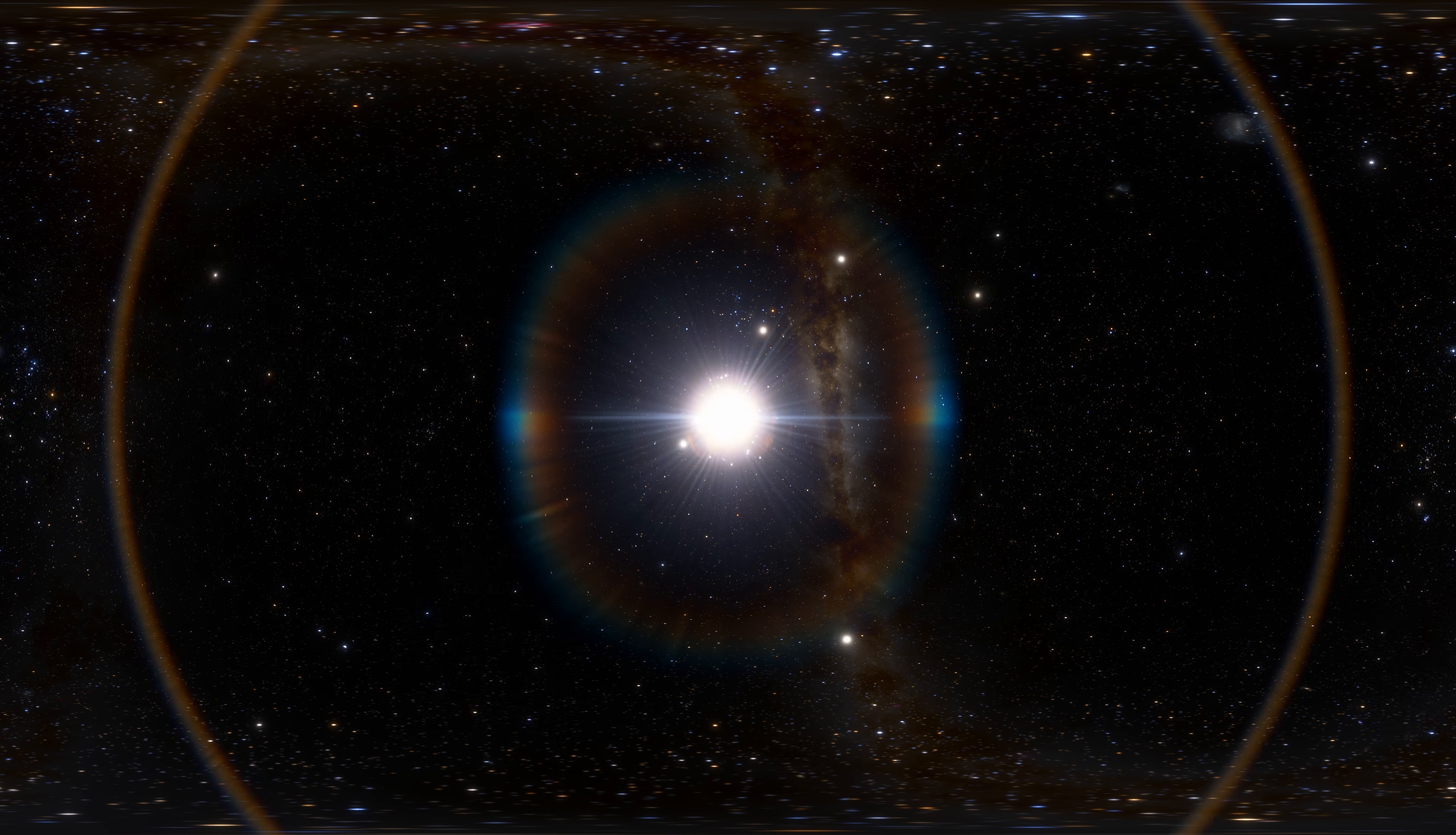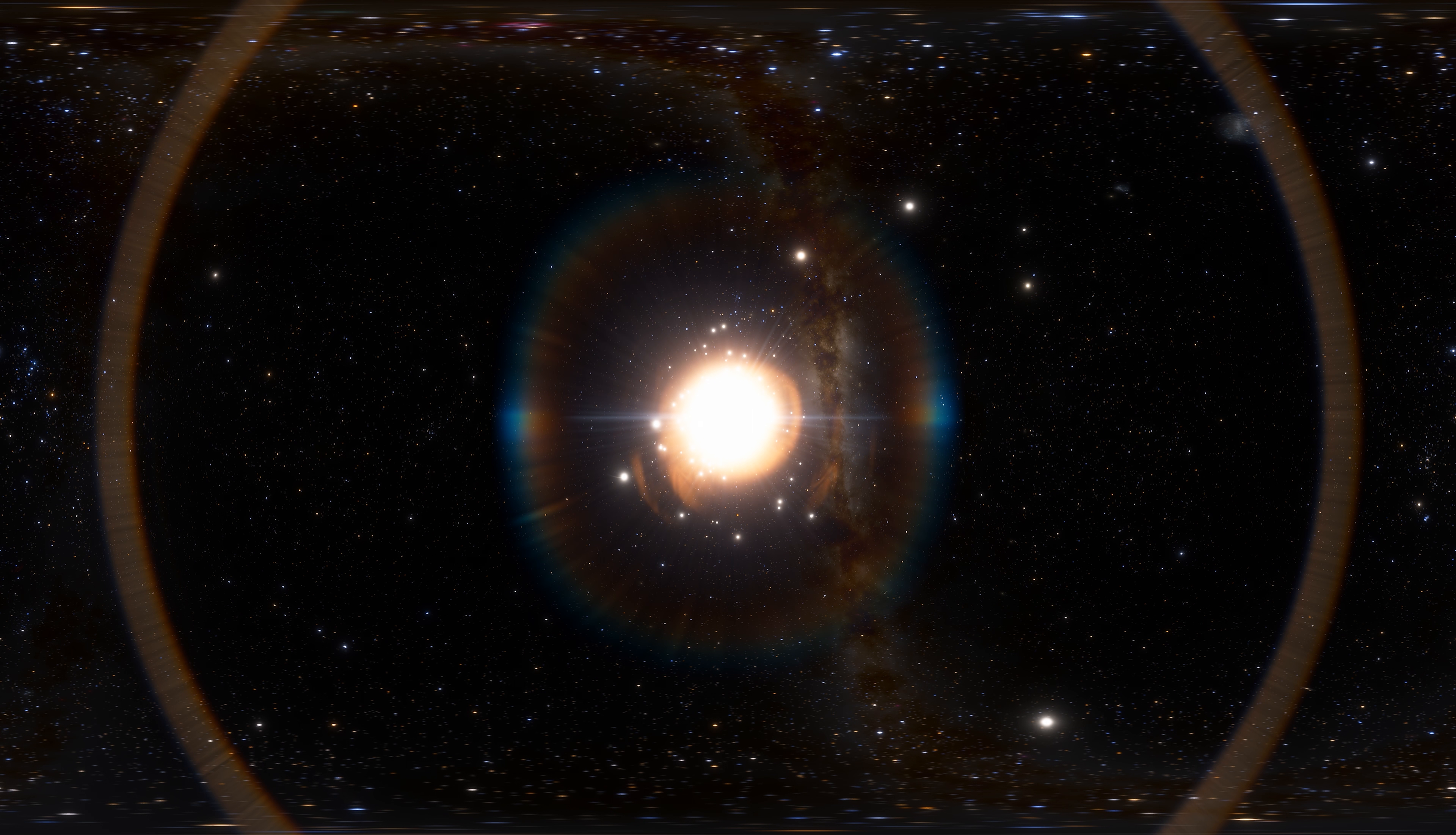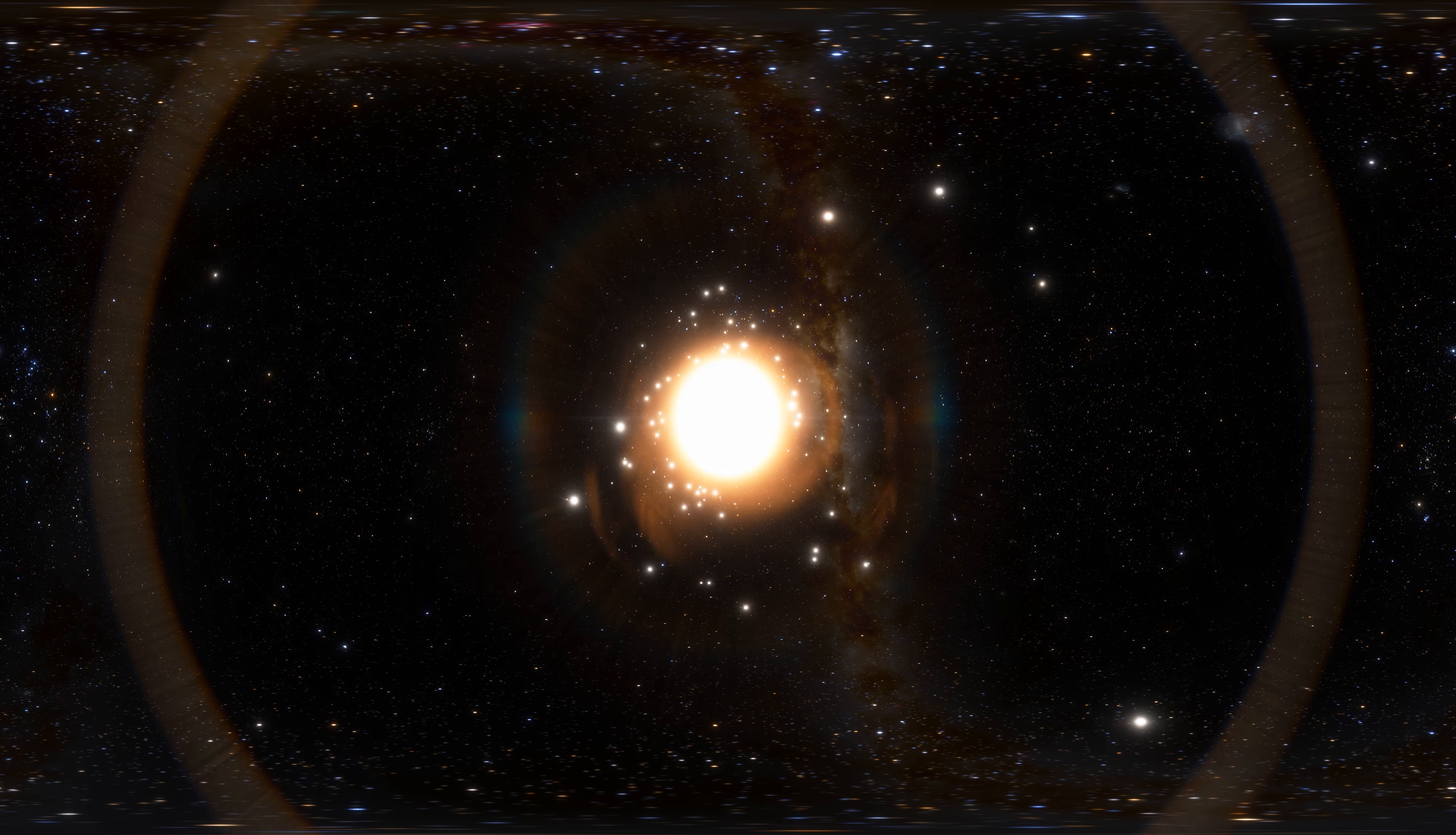The next star is Arcturus, the fourth brightest star in the night sky and the brightest star in the northern constellation of Boötes. Its luminosity is 110 times bigger than the Sun. It is a red giant.